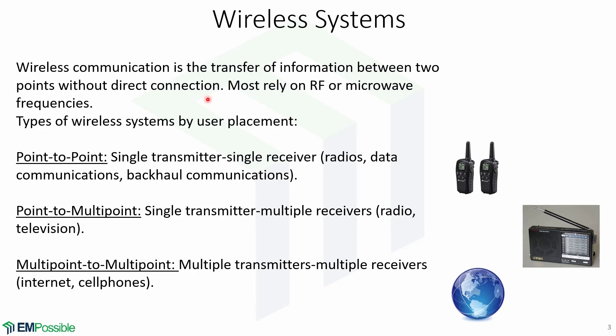The classification of wireless systems can be done in many ways. One of these classifications is by user placement. For example, a point-to-point system is a single transmitter communicating with a single receiver, like radios, data communication, and backhaul communications.